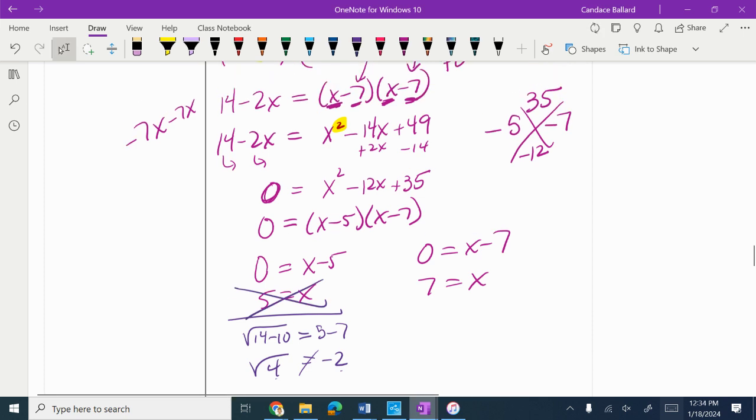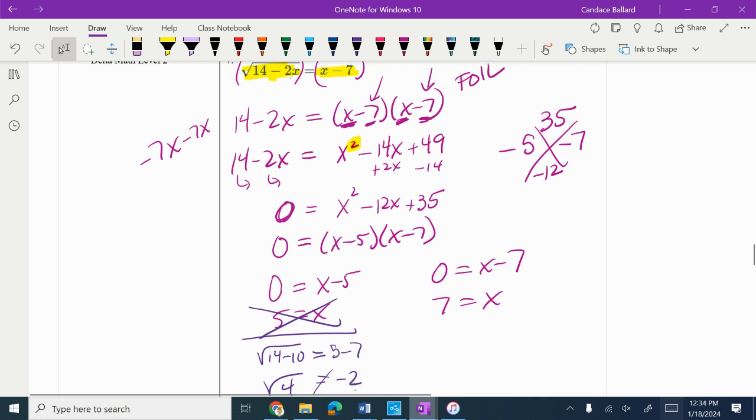Let's try x = 7. 7 times 2 is 14, so I get the square root of 14 minus 14 equals 7 minus 7. 14 minus 14 is 0, and 7 minus 7 is 0, so that is a good solution.